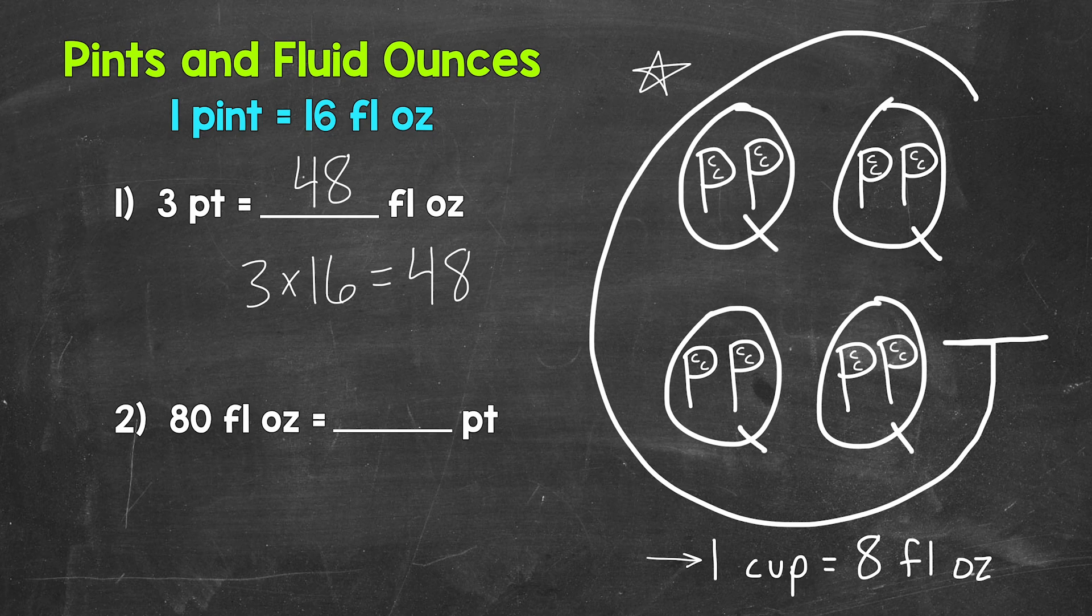Let's move on to number two, where we have 80 fluid ounces equals how many pints? So fluid ounces to pints here. Well, each group of 16 fluid ounces equals a pint. So how many groups of 16 fluid ounces in 80 fluid ounces?